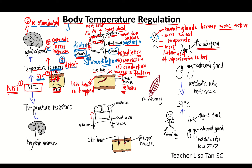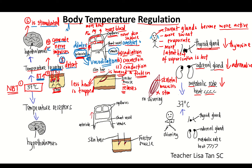Thyroid glands will secrete less thyroxine. This causes our metabolic rate to decrease, so less heat is generated. The skeletal muscles are not stimulated, so no shivering occurs.